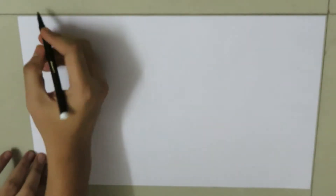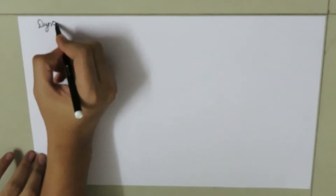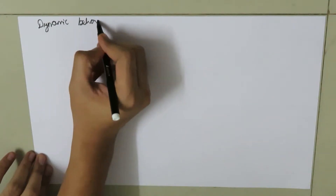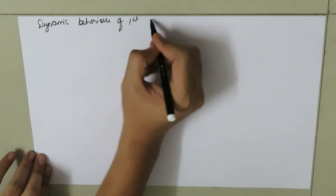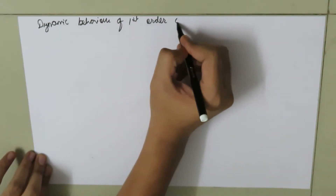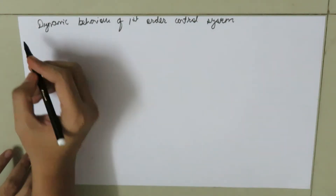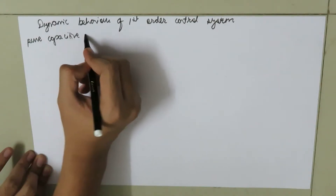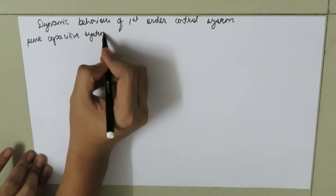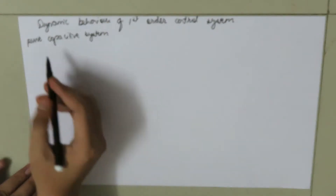Today we are going to discuss the dynamic behavior of the first order control system by taking an example of a pure capacitive system. So let's begin. Consider a tank.